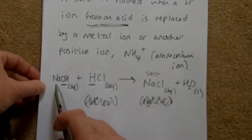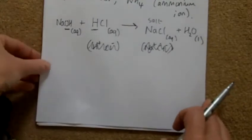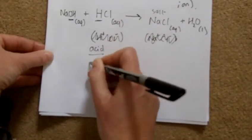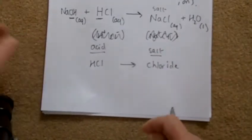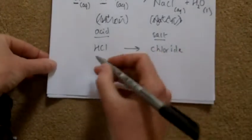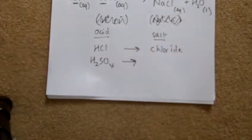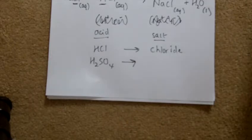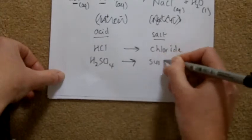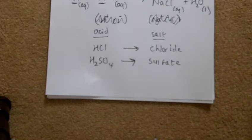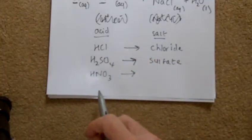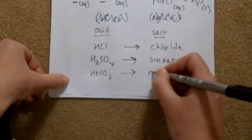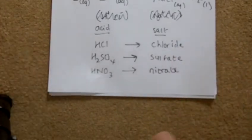There are quite a few salts. If we have hydrochloric acid, the salt made is always called a chloride — sodium chloride, magnesium chloride, calcium chloride. If the acid is sulfuric acid, it makes the salt sulfate — calcium sulfate, magnesium sulfate. Nitric acid makes the salt nitrate. These are the three most common acids and therefore the three most common salts.